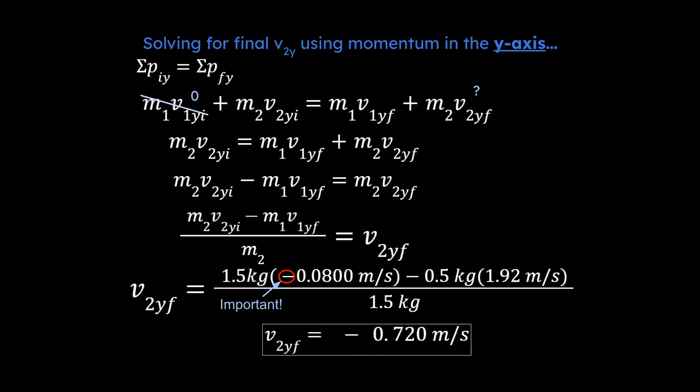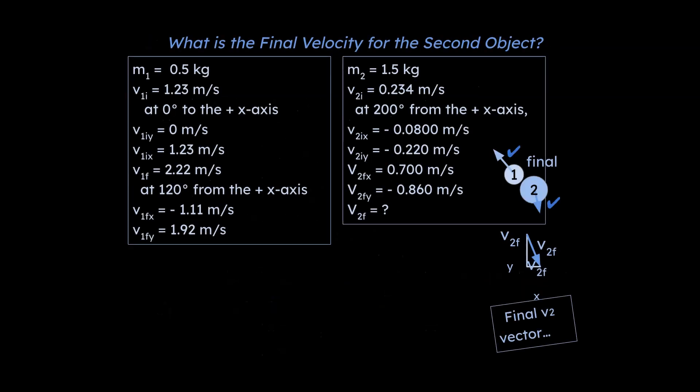So all right, we've done the components for our final vector in the x and the y. What do you think we're going to do with that? Any ideas? Well what we're going to do with that is we're going to make a right triangle. So effectively we know this v2 final in the y, v2 final in the x, we're going to come up with this over here. How could we go about doing that? How could we use two legs of a right triangle and come up with a hypotenuse?